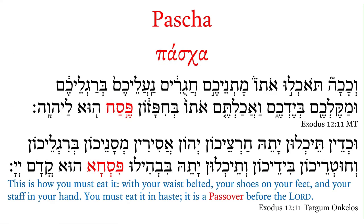Speaking of this Greek word, it reflects Pesach, which is the Hebrew word for Passover. We notice in Exodus 12:11 the Masoretic text on the top and then Targum Onkelos on the bottom with Pescha. You can see the similarity of that word to the Greek word Pascha, which helps us see that Pascha is reflecting an Aramaic word rather than Pesach, the Hebrew word.